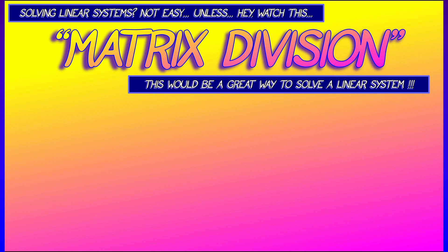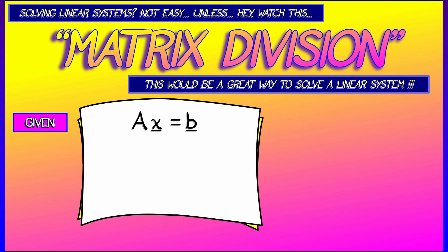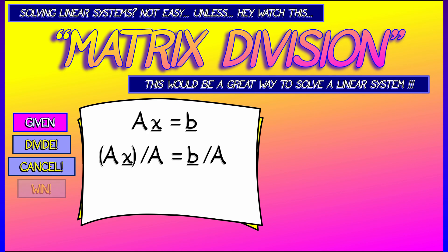Watch this. Let's say you've got Ax equals b, and you want to solve for x. Well, it's simple. All we do is divide both sides by A. So you do that, and then on the left hand side, the A's cancel. That gives you x, and boom, that's it. That's your answer. x is equal to b over A.